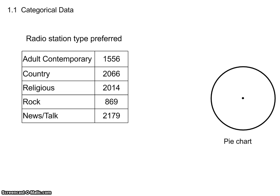In chapter one, the first section, we look at what's called categorical data. As we move through chapter one, we'll also run into quantitative data. How we know the difference between the two is how the data is collected — am I collecting numbers or am I collecting words? When collecting words, it's like answering a survey question: do I fit into a certain category?